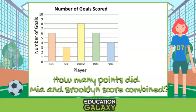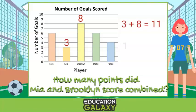This question wants to know how many points did Mia and Brooklyn score combined. We can see Mia scored three points and Brooklyn scored eight points. To find the total, we need to add the two numbers. Three plus eight equals 11, so they scored a total of 11 points. Go team!